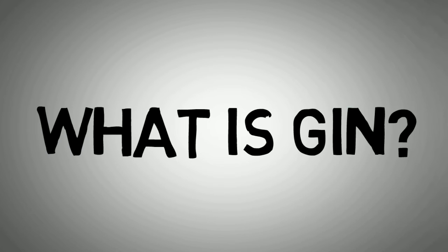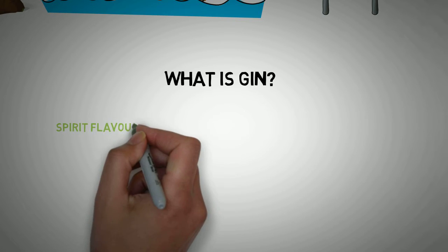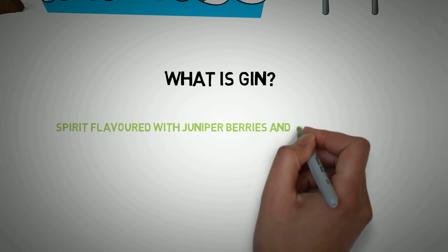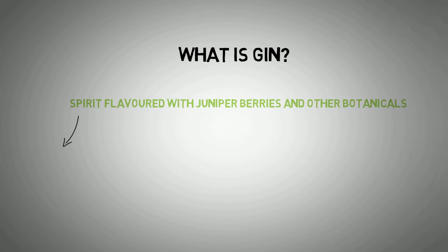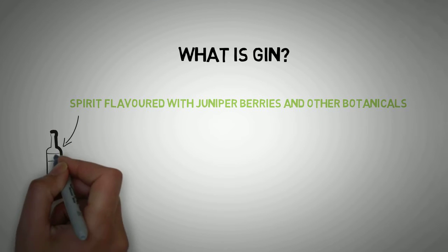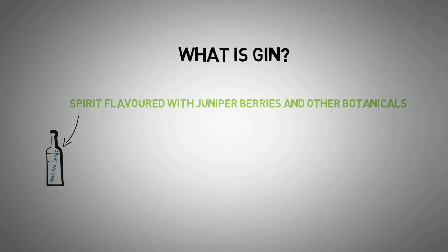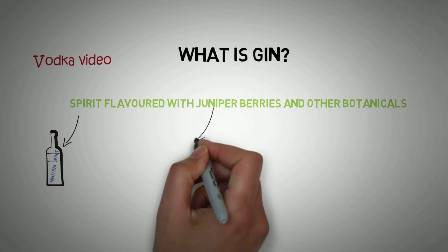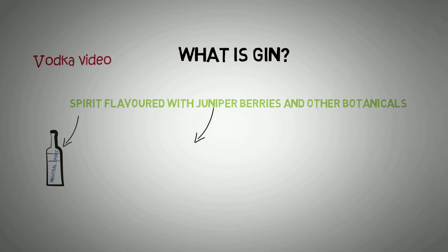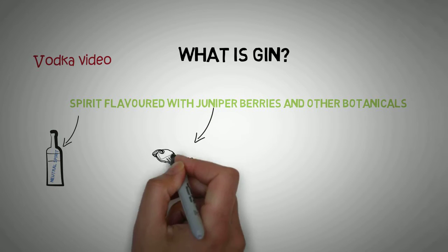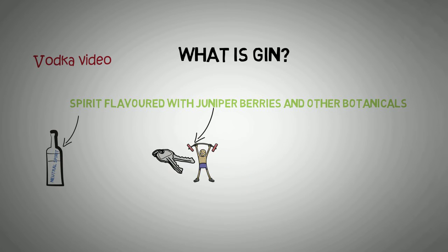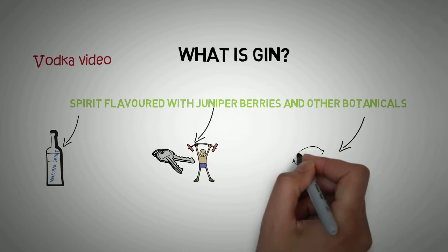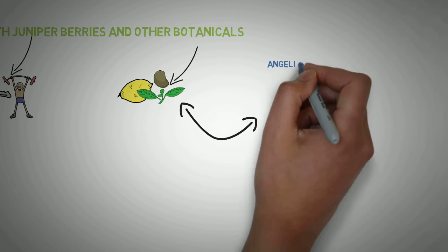What is gin? Gin is a spirit flavored with juniper berries and other botanicals. It's a neutral spirit — if you want to know more about that, check out my vodka video. Juniper berries are the key ingredient in gin and have a predominant flavor. The other botanicals might be roots, herbs, spices, fruits, or seeds.